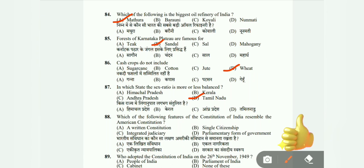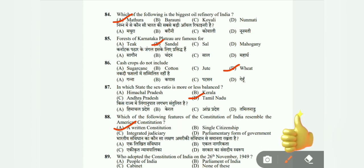Question 88: Which feature of the Constitution of India resembles the American constitution — written constitution, single citizenship, integrated judiciary, or parliamentary form of government? The correct answer is A, written constitution. Question 89: Who adopted the Constitution of India on 26 November 1949 — People of India, Parliament, Cabinet, or none of these? The correct answer is A, People of India.